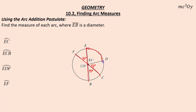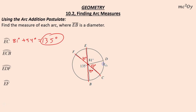Arc EC is 81 degrees plus 54 degrees — it's the sum of our adjacent arcs ED and DC — for a grand total of 135 degrees. And arc ECB: going from E to C to B, notice that is a semicircle, so that is 180 degrees.